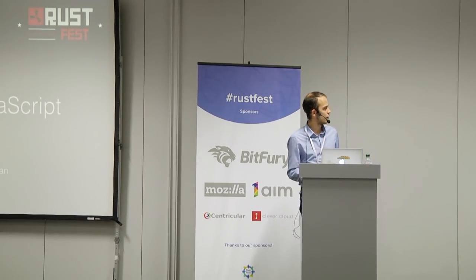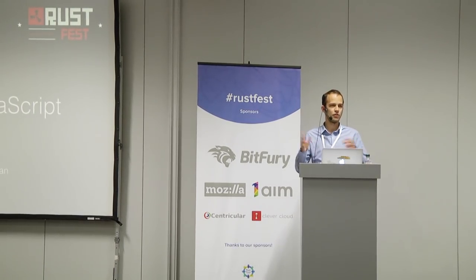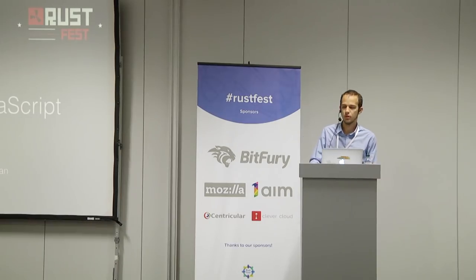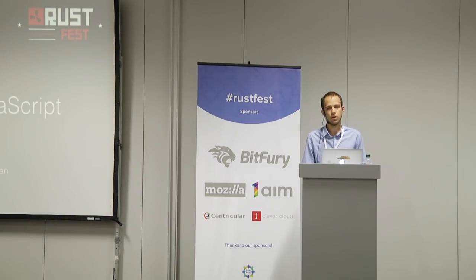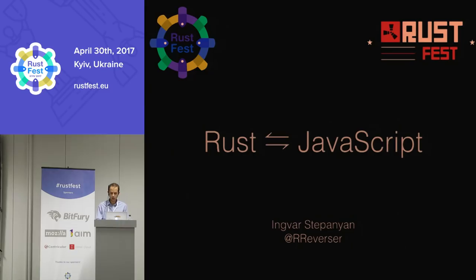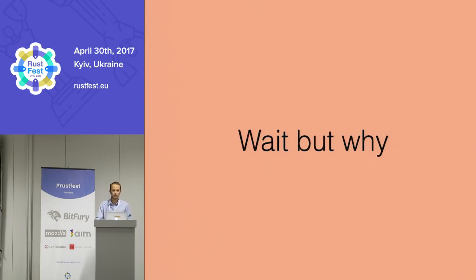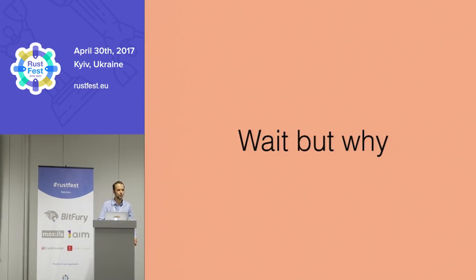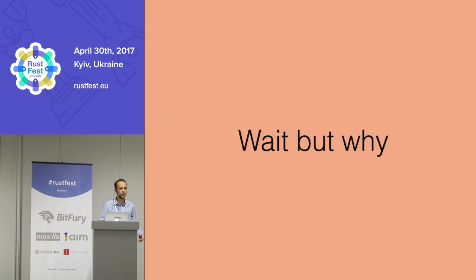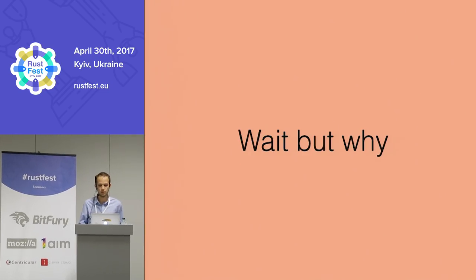Hello, I'll be talking today about Rust and JavaScript interop - why would you do that and how would you do that. I won't be talking about why we would choose Rust, because you came to the conference and you already like Rust. So why JavaScript? Why would you ever choose it as a target if you have Rust that can compile to native and run native?